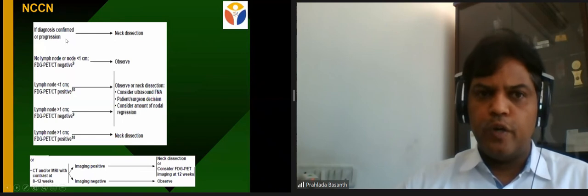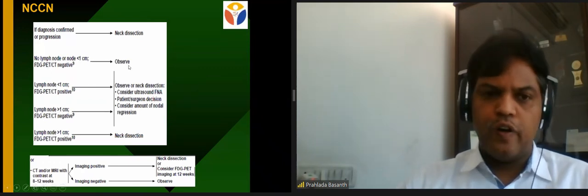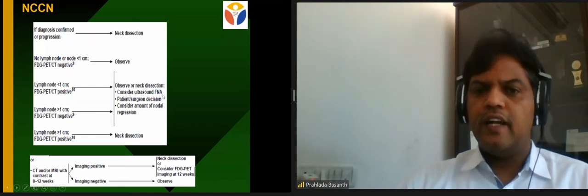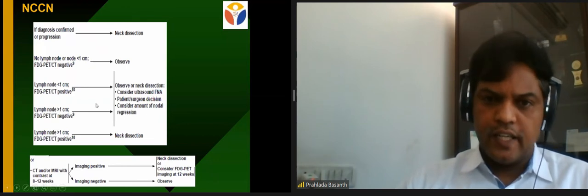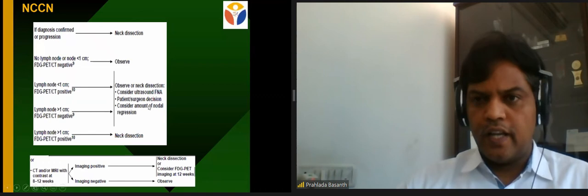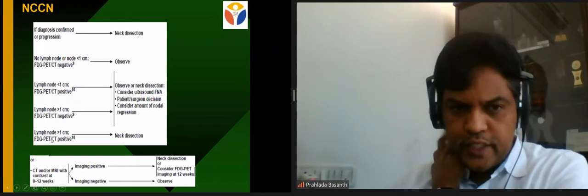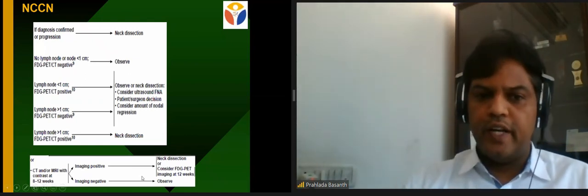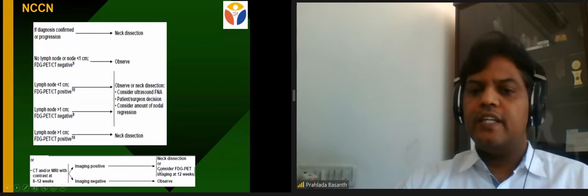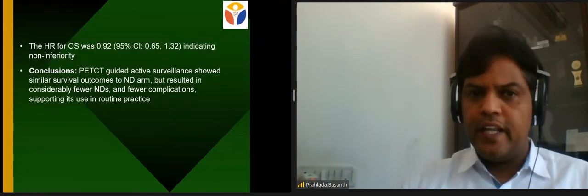NCCN recommends: if progression is confirmed, do neck dissection; if lymph node is less than 1 cm with no FDG uptake, close follow-up; if node is less than 1 cm but FDG positive, do biopsy or ultrasound-guided FNAC; if node is greater than 1 cm and FDG negative, aggressive investigation or surgery based on clinical judgment; if node is greater than 1 cm and FDG positive, neck dissection is recommended. PET/CT has now virtually replaced CT and MRI alone in post-chemoradiotherapy response assessment.